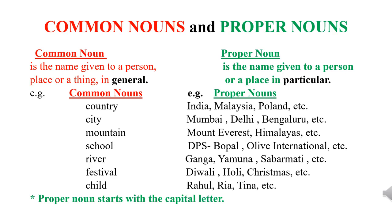School — school is a common noun. But if we talk about DPS Bhopal, Olive International, it means we are talking about the particular schools. So these are proper nouns. River — river is a common noun. But if we talk about Ganga, Yamuna, Sabarmati, it means we are talking about the particular rivers. So these are proper nouns.